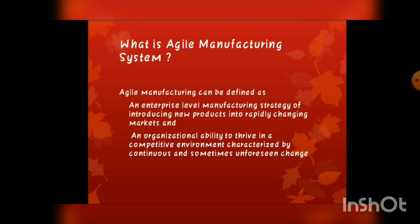What is Agile Manufacturing System? Agile Manufacturing can be defined as an enterprise-level manufacturing strategy of introducing new products into rapidly changing markets and an organizational ability to thrive in a competitive environment characterized by continuous and sometimes unforeseen change.